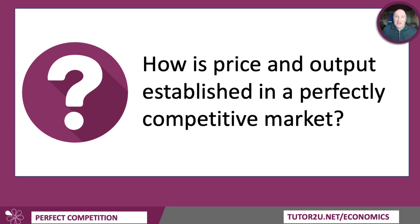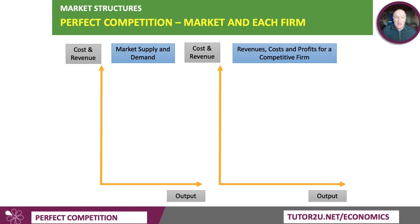In a perfectly competitive market, we're going to walk through the diagram together. How is price and output established? The key in this market is to have two diagrams: on the left-hand side, the market — market supply and demand; on the right-hand side, a representative firm in the market. Obviously there are many firms, so you just choose a representative firm.